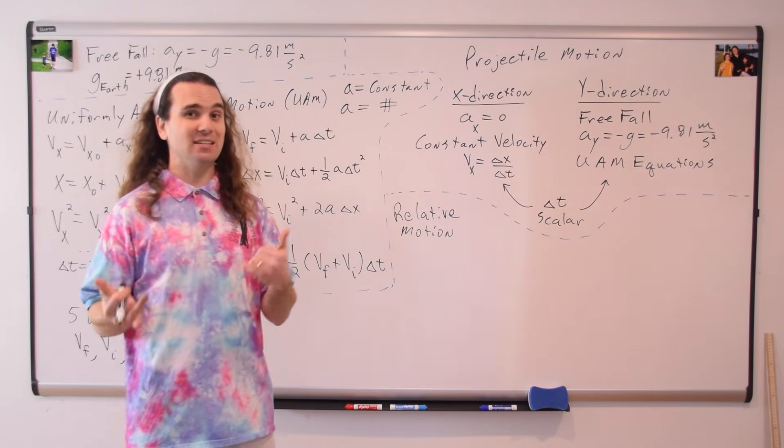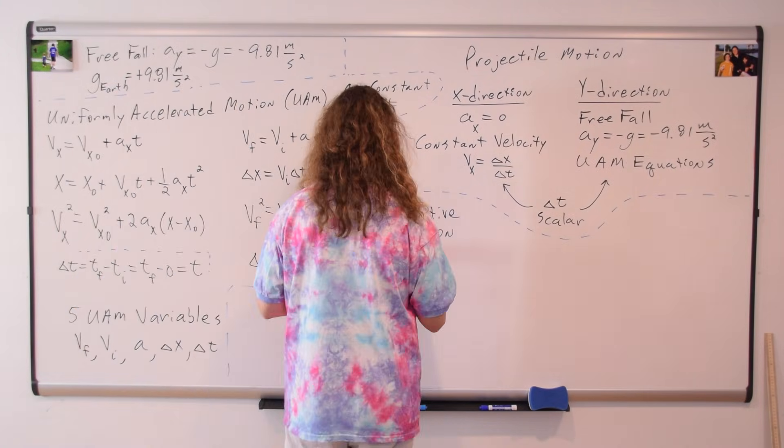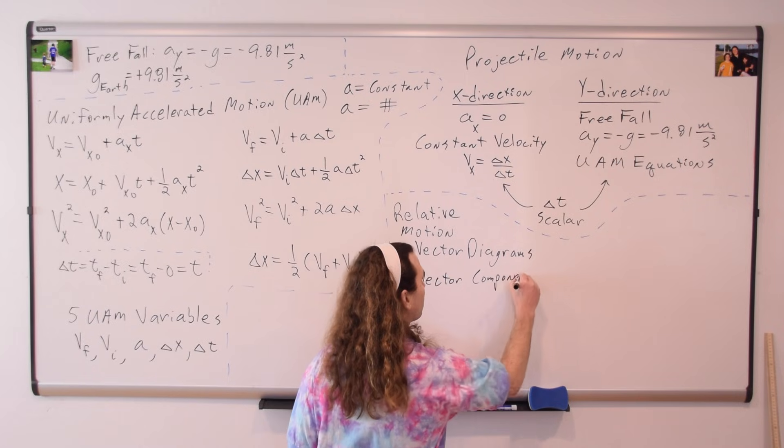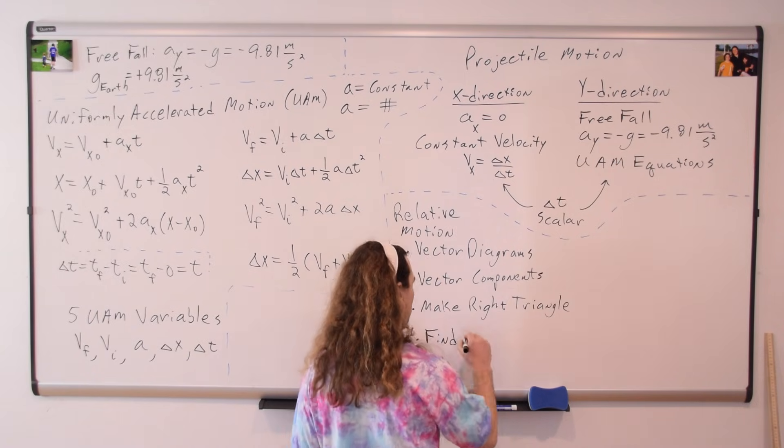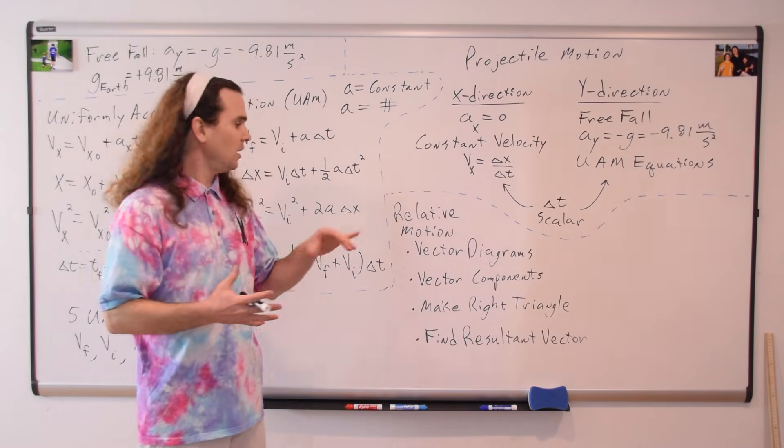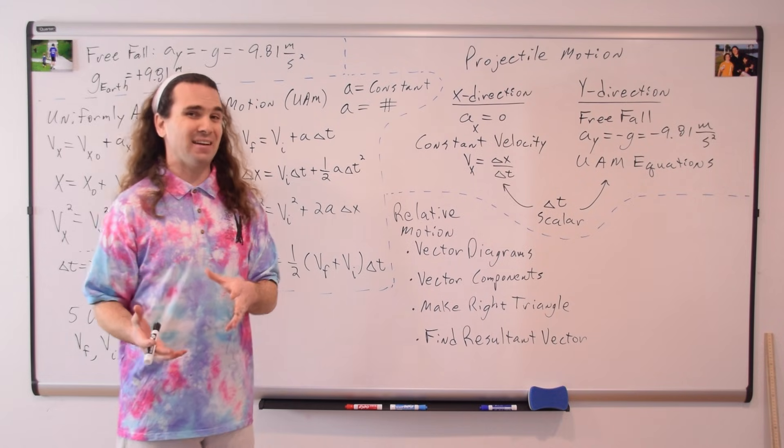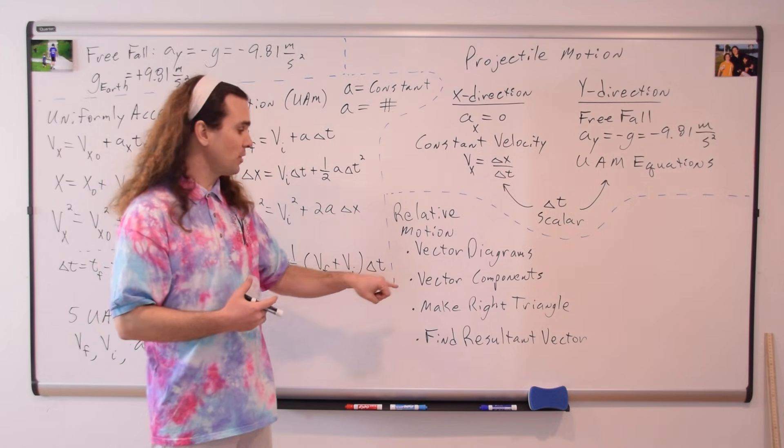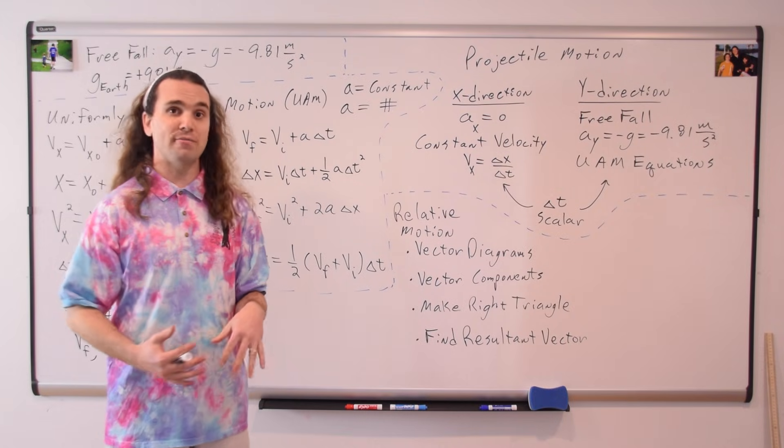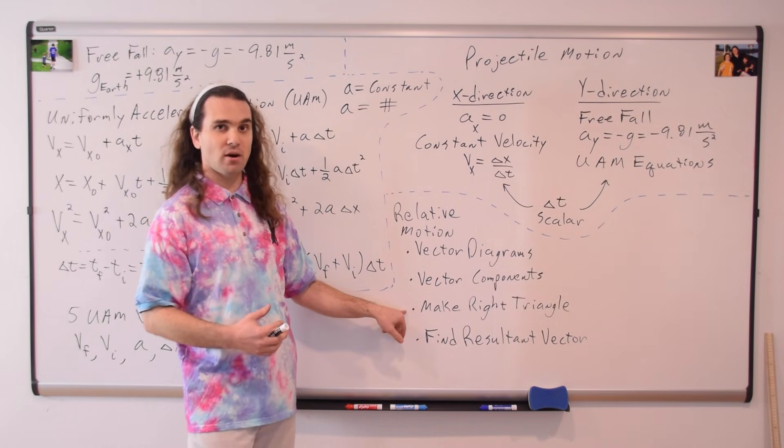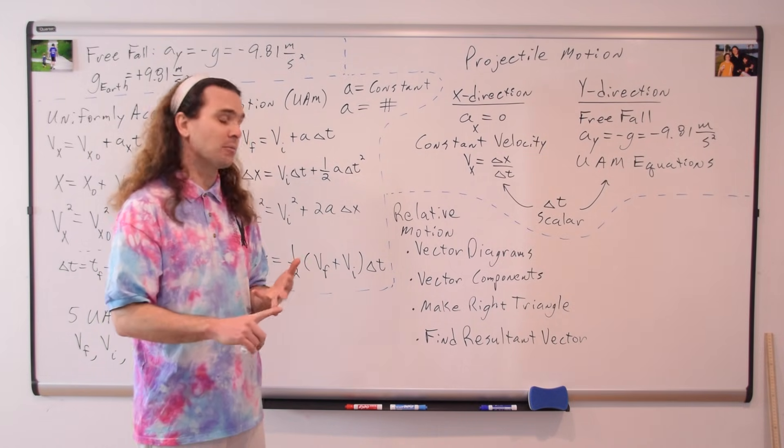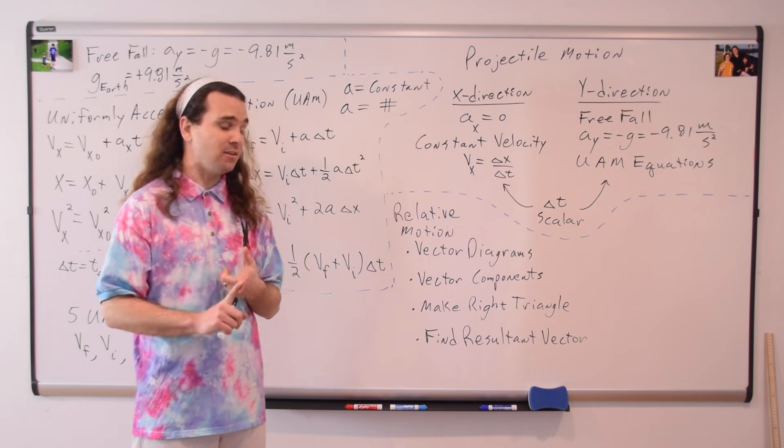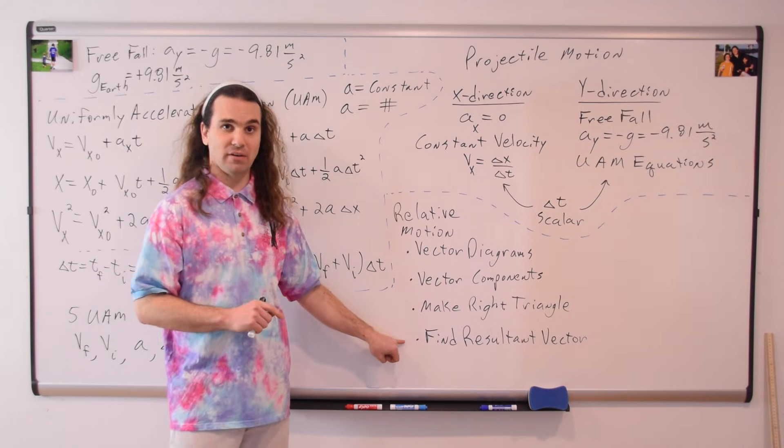So, relative motion is vector addition. Draw vector diagrams. Break vectors that are neither directly in the x or y direction, using SOH CAH TOA into their components. Redraw the vector diagrams to make a right triangle, and then, using SOH CAH TOA and the Pythagorean Theorem, find both the magnitude and the direction of the resultant vector.